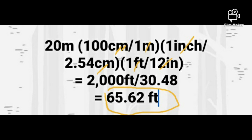So, 2,000 feet divided by 30.48 is equal to 65.62 feet. Don't forget to cancel the same unit.